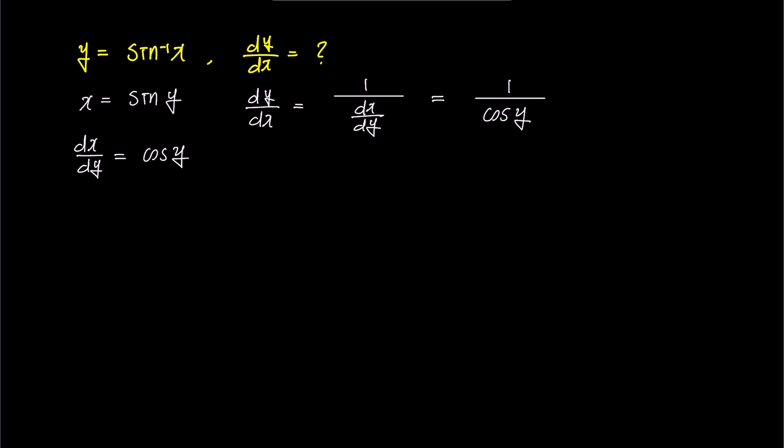To express y on the right-hand side of the equation as a function of x, we can utilize basic properties of trigonometric functions. We have sine y is x, and if we represent x as a fraction, it becomes x over 1.